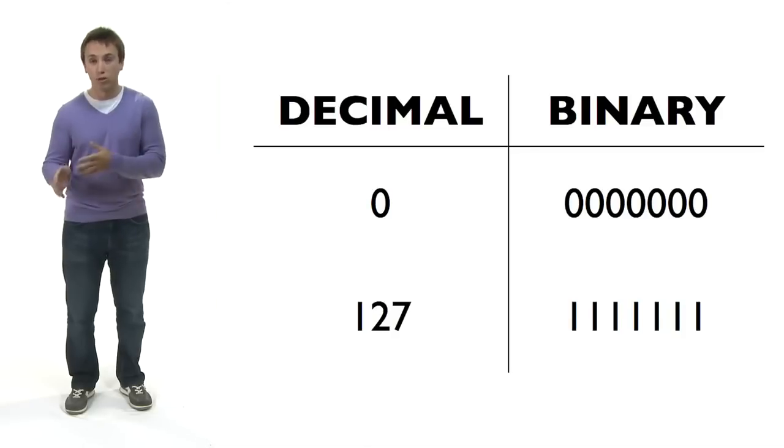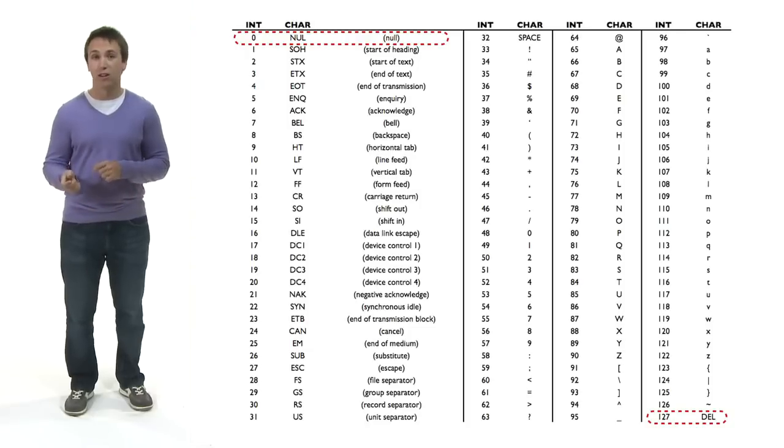All 0s and all 1s, respectively. The designers of ASCII decided, therefore, to reserve these numbers for extra special characters, namely the null character and the del character.